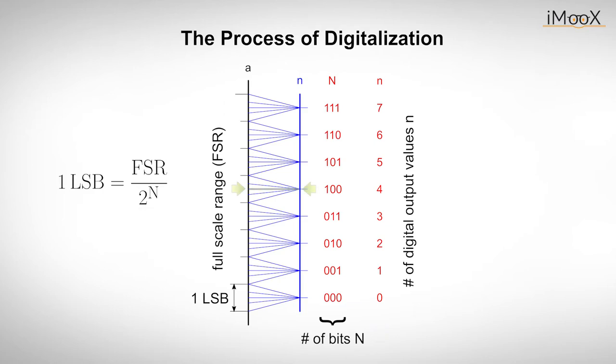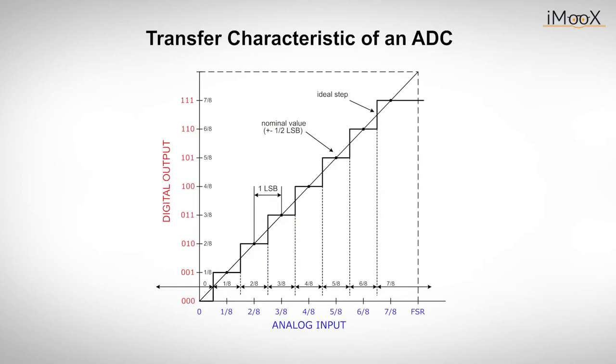If we take the middle of one quantization interval, we have to change the input value by at least one half LSB to get to the next interval. We can therefore define an important characteristic, the transfer curve. The transfer curve shows the analog values of the input on the x-axis and the digital values of the output of our ADC on the y-axis.